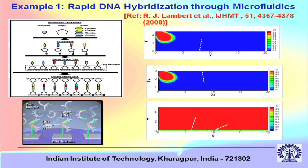The diffusion coefficient of single-stranded DNA is typically of the order of 10⁻¹¹ m²/s — it is very slow. The single-stranded DNA will take a long time to reach the reaction sites, meaning that disease detection will take a long time. So the goal is to make rapid DNA hybridization by accelerating the movement of the DNA.